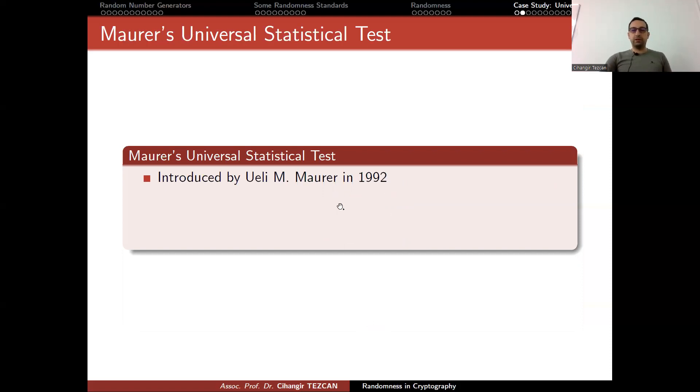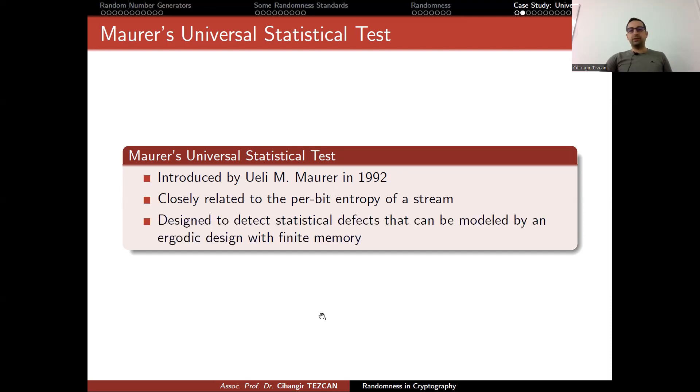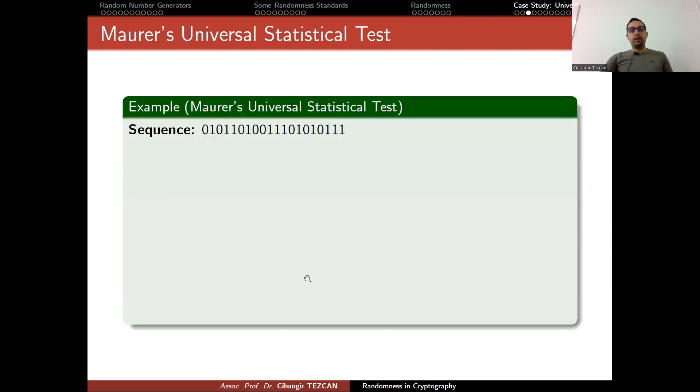For this reason, let's look at what Maurer proposed. In 1992, Maurer proposed the universal test, and this is closely related to the per-bit entropy of a stream. Designed to detect statistical defects that can be modeled by an ergodic design with finite memory. Let's see an example how Maurer's universal statistical test works.